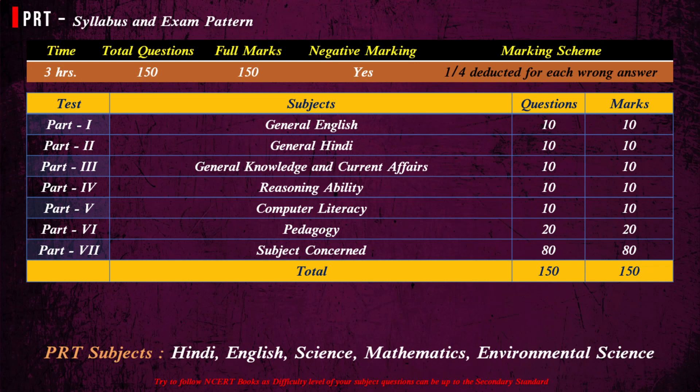The paper is divided into 7 sections: General English, General Hindi, General Knowledge and Current Affairs, Reasoning Ability, Computer Literacy, Pedagogy, and Subject Concerned.